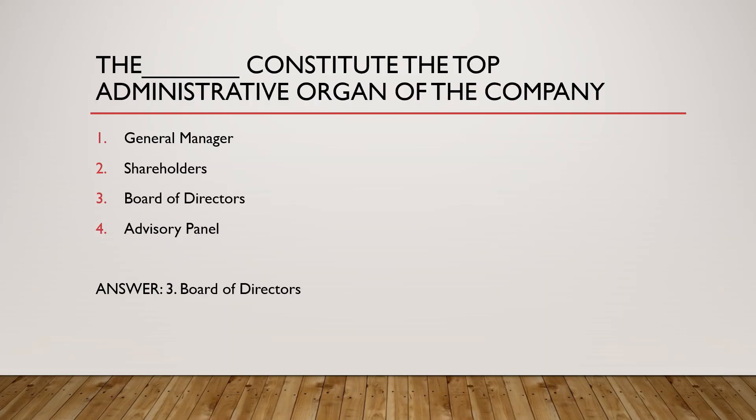Question: The blank constitutes the top administrative organ of the company. The four options are: general manager, shareholders, board of directors, and advisory panel. The board of directors are the top administrative organs of the company. So the answer is option three — board of directors.